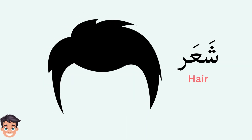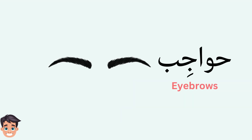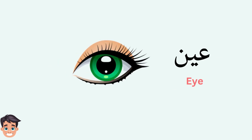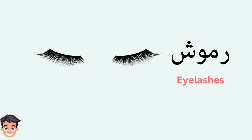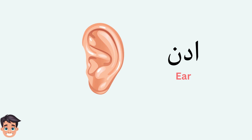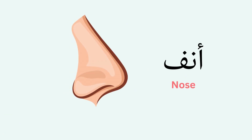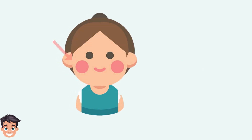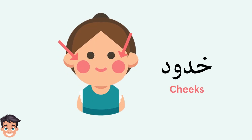وجه (face), شعر (hair), جبين (forehead), حواجب (eyebrows), عين (eye), رموش (eyelashes), أذن (ear), أذنان (ears), أنف (nose), خد (cheek), خدود (cheeks).